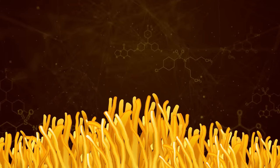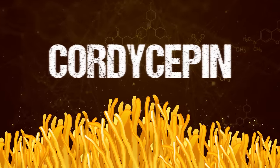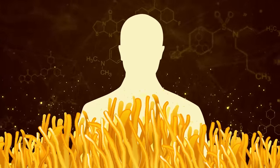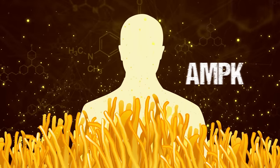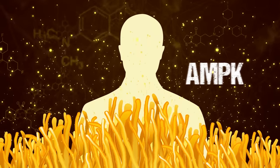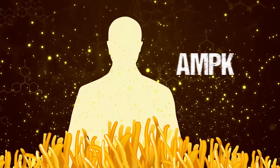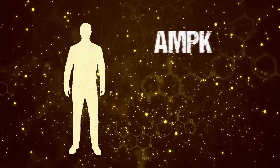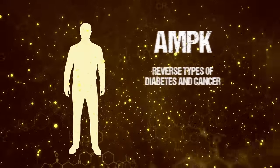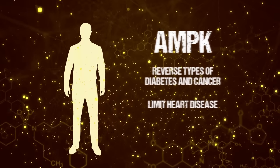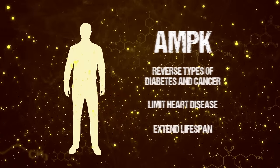Cordyceps fungi contain a chemical called cordycepin that, in biological organisms, switches on a cellular protein called AMPK. And it turns out AMPK is pretty powerful stuff. Initial tests suggest drugs that trigger AMPK production in our bodies are able to reverse some types of diabetes and cancer, limit heart disease, and even make us live longer.